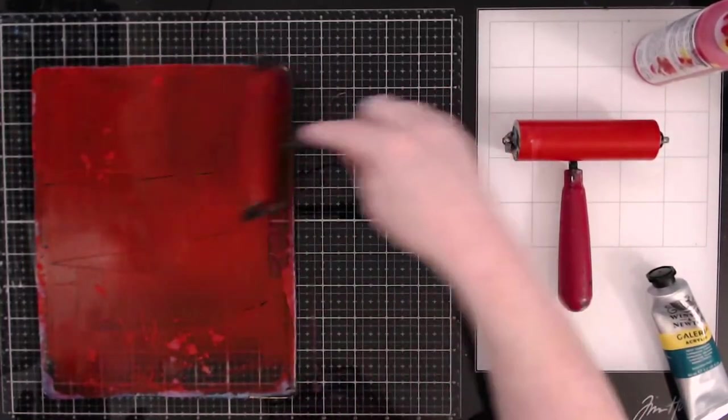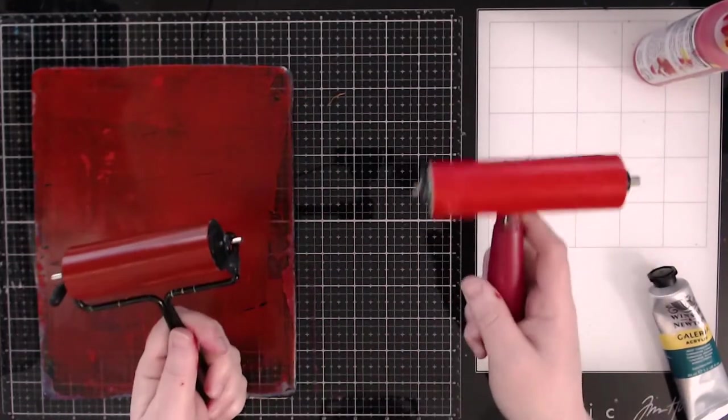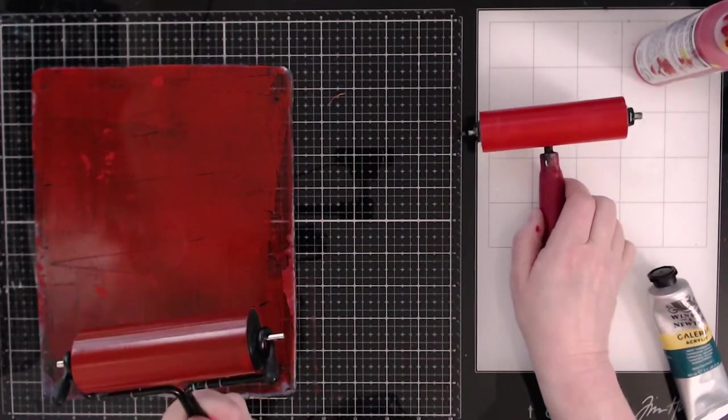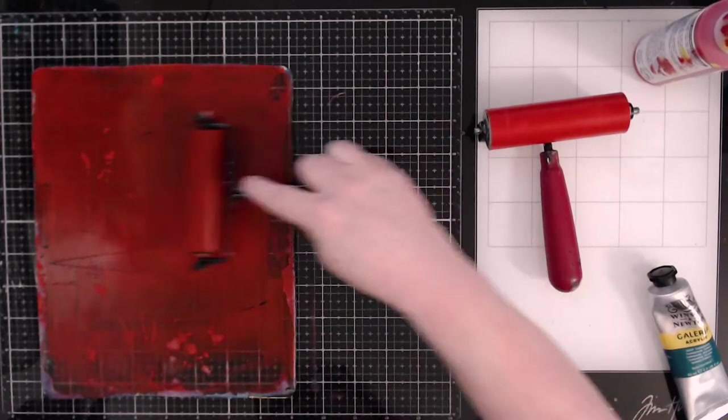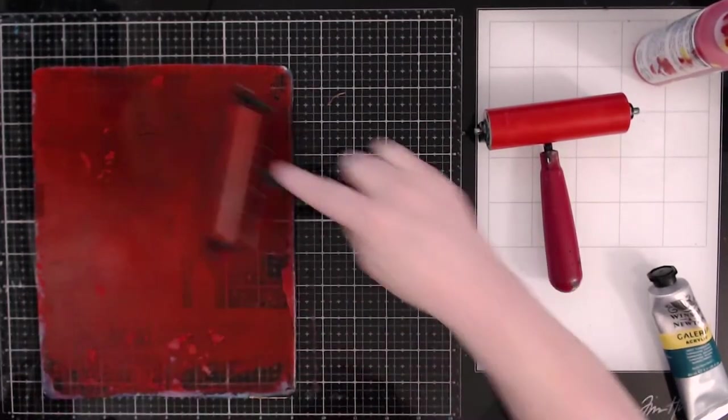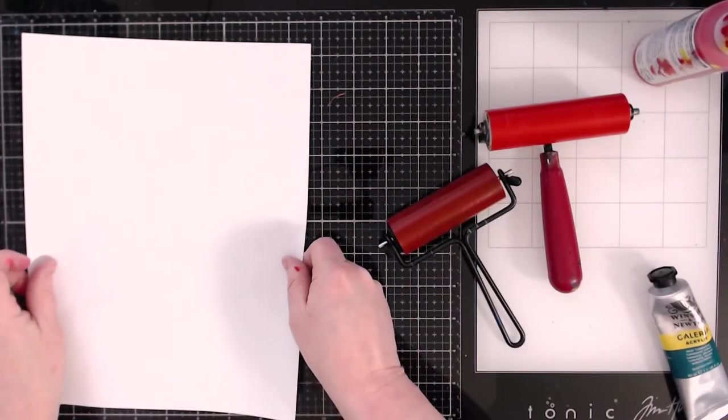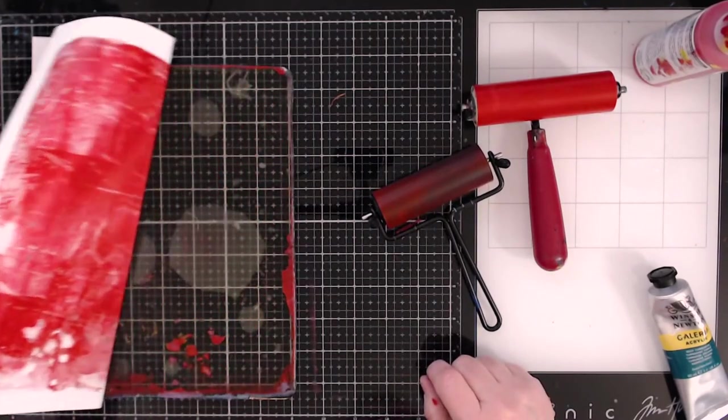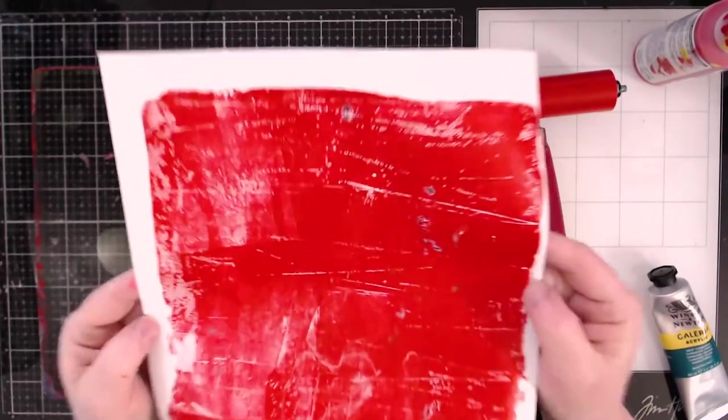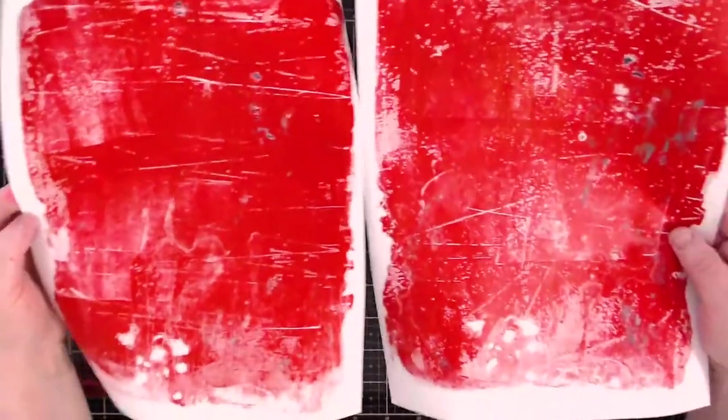But the other thing you have to keep in mind when you're working with the Tim Holtz brayer is the weight. The speed ball brayer is much heavier than the Tim Holtz brayer. And I have to say, you have to be very gentle handed if you do not want those brayer lines. So let's see how we did. All right. So let's see what we get.